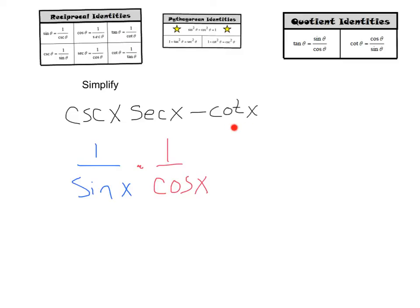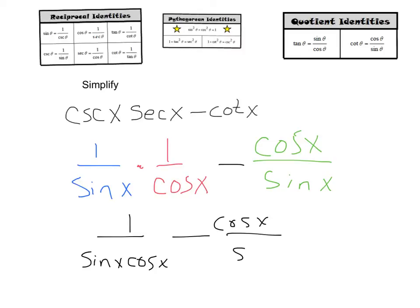Next up we have minus cotangent x. Looking at my quotient identities, I see that cotangent x equals cosine over sine. Let's go ahead and replace that too. Combining all these, I'm going to end up with 1 over sine x cosine x minus cosine x over sine x.